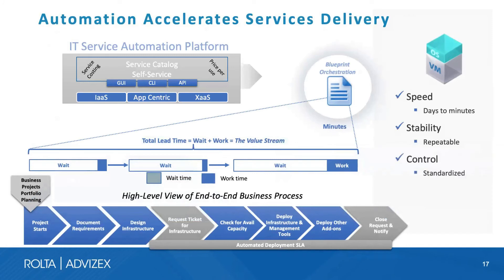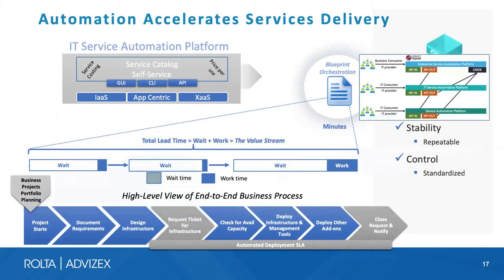The technology capabilities that enable automation and orchestration are driven through what we call the blueprint. A service catalog in the IT service automation platform includes integrations, graphical user interfaces, and the ability to cost out services with a price per use. The orchestration layer coordinates across all three types of automation — service automation, infrastructure automation, and device-level automation — all coordinated through the blueprint process.